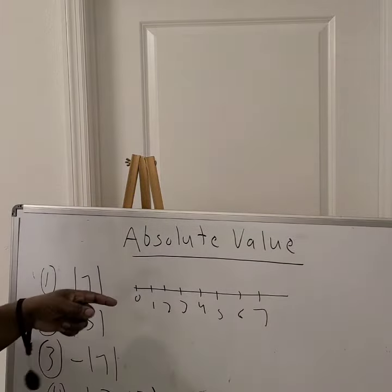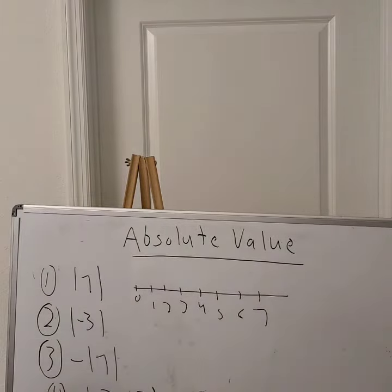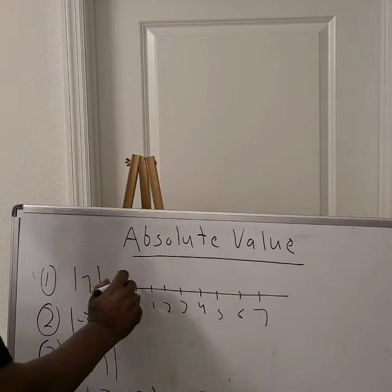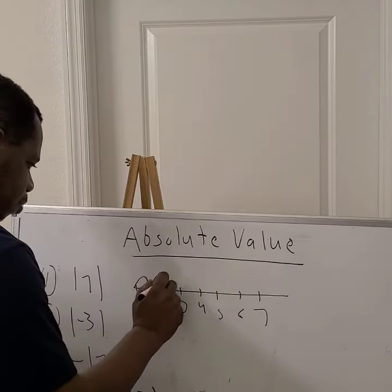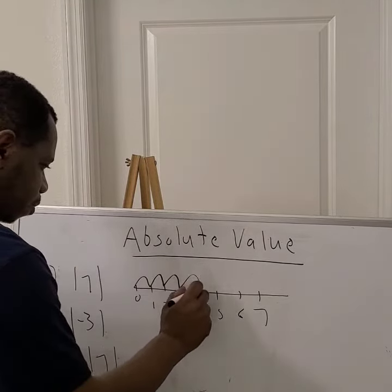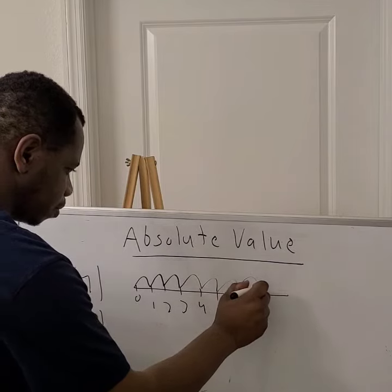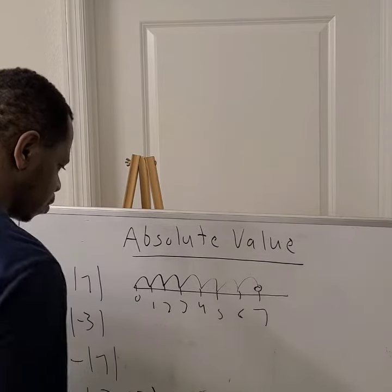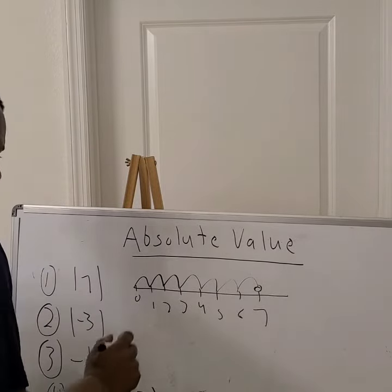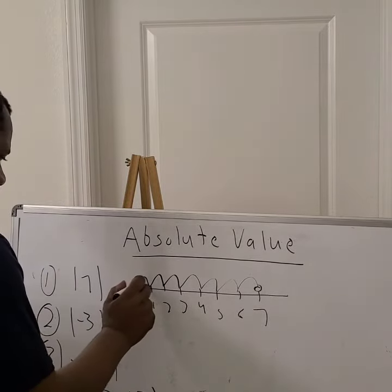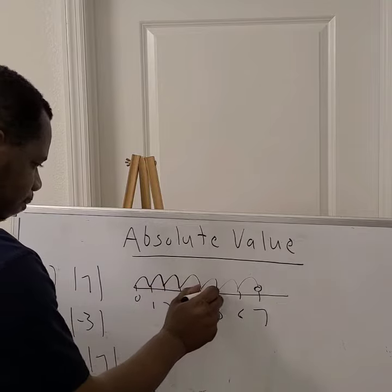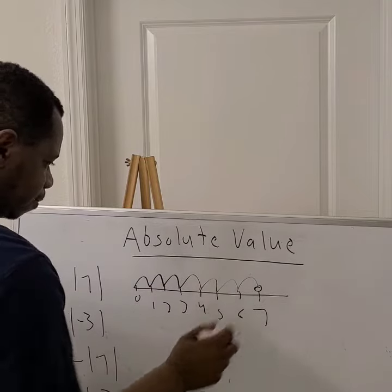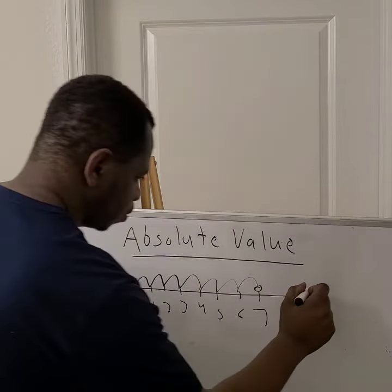Anyone know how far is it from zero? So one, two, three, four, five, six, seven. So your answer would be seven.